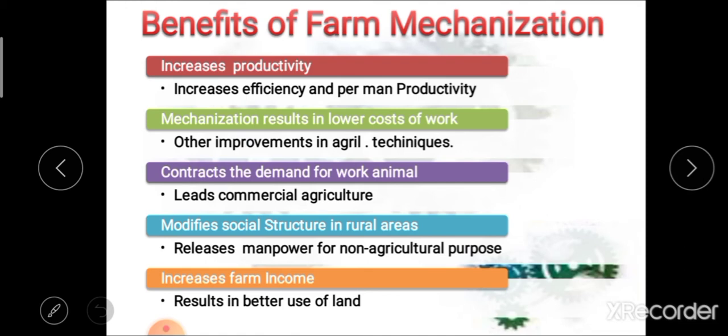The next benefit is that it modifies the social structure in rural areas. This mechanization results in significant modification of the social structure in rural areas. It frees the farmer from much of the laborious, tedious hard work on the farm, making the life of the farmer easier and ultimately increasing the standard of living. Farm mechanization can also lead to modification of the social structure in rural areas. Additionally, it releases manpower for non-agricultural purposes, as various types of machinery perform different agricultural work, freeing people for non-agricultural tasks.